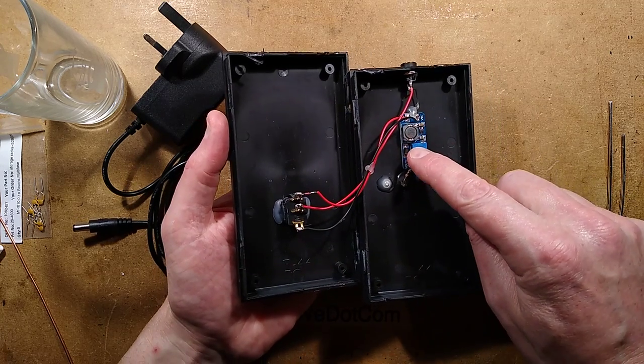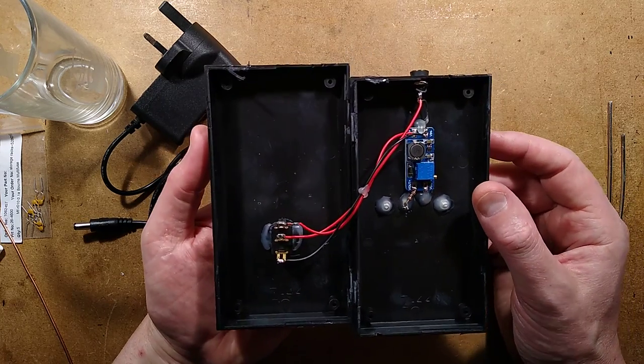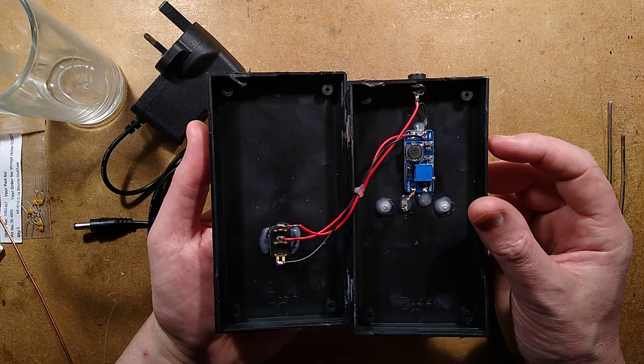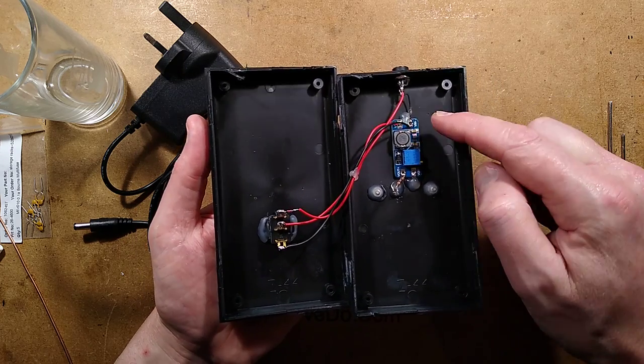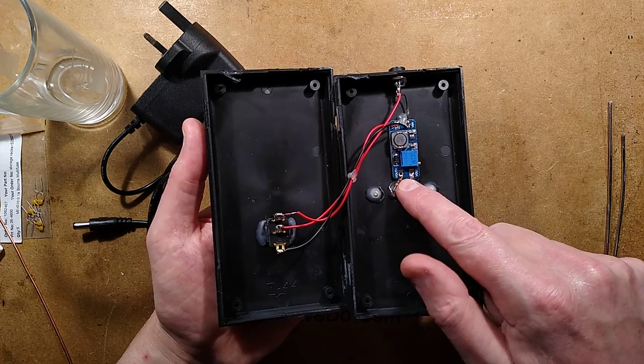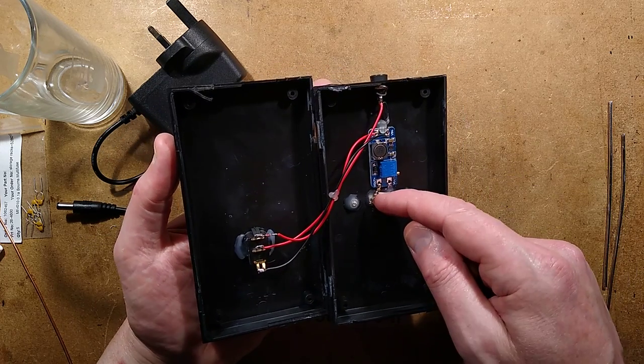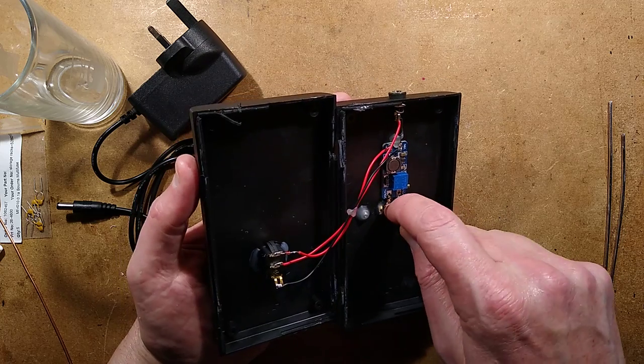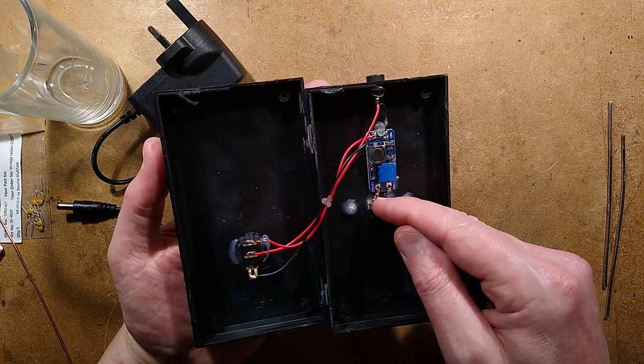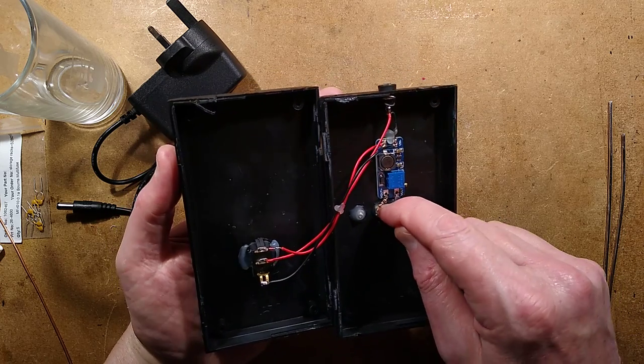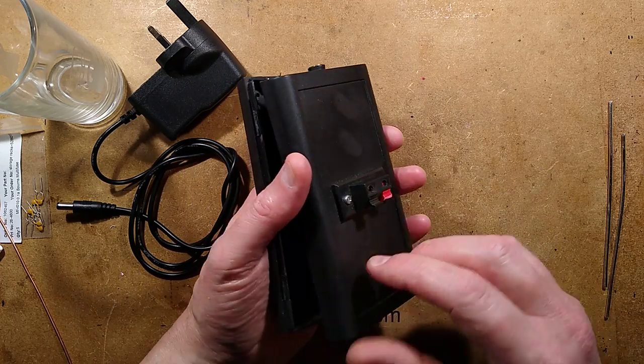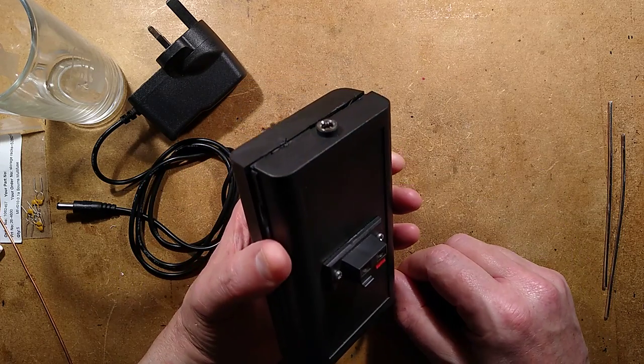Then there's a little boost converter, an eBay special, the sort you'd buy for just a couple of dollars probably. It takes 9 volts in and boosts it up to 20-some volts to emulate the three 9-volt batteries. Then it's got a 150 ohm, a very crispy, crunchy 150 ohm resistor. It was measuring 147 ohms, probably measuring less now.